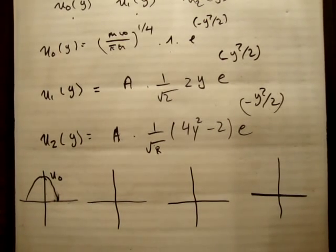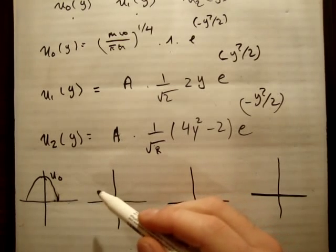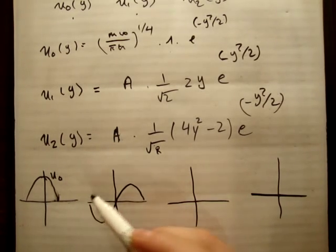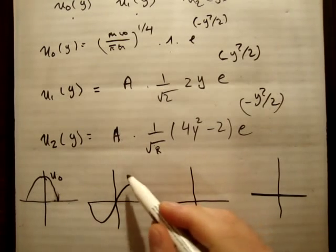However, an odd wave function is not symmetric around the origin. So our odd wave function is going to be this. That's our odd wave function. So it's even, odd. This is U1.